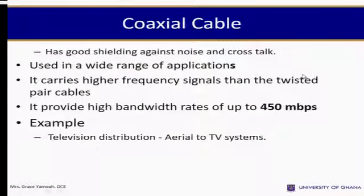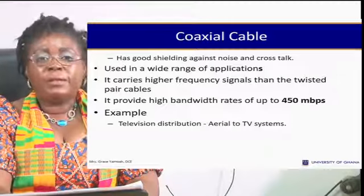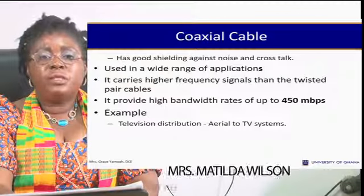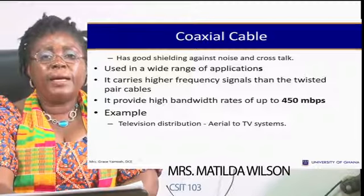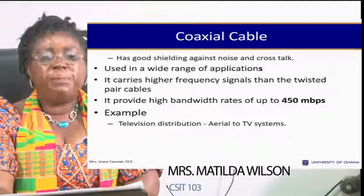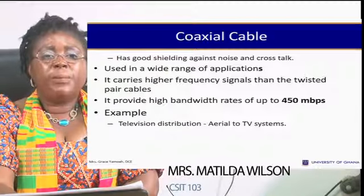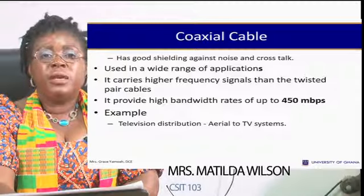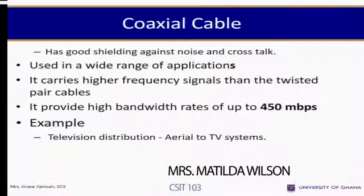Coaxial cable has good shielding against noise and crosstalk. It is used in a wide range of applications and carries higher frequency signals than twisted pair cables. It provides higher bandwidth of up to 450 megabytes per second. Examples include television distribution and cable TV systems.